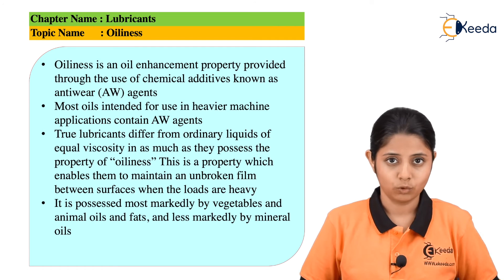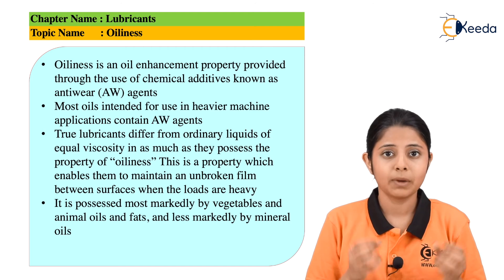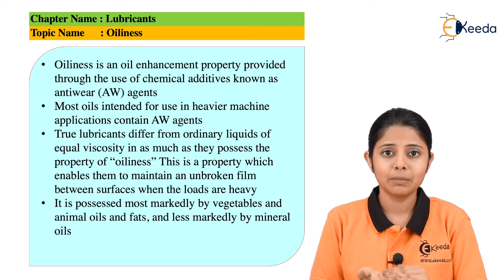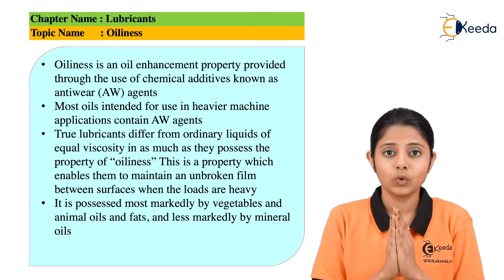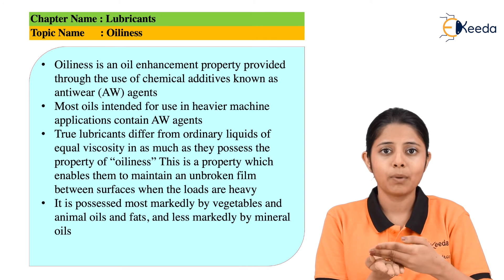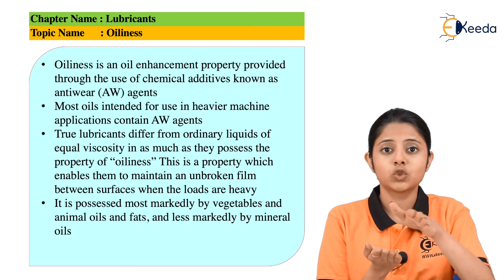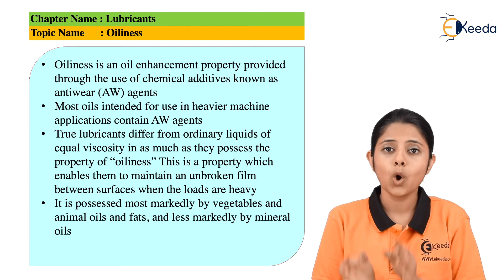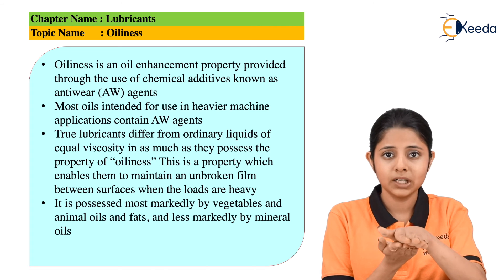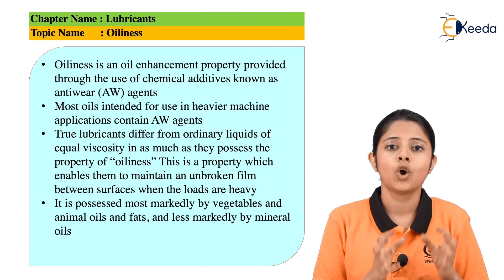Where is this property of oiliness used? Oiliness is the property by virtue of which the oil can maintain a film between two or more parts of a machine. That film helps in maintaining friction levels. If there are two machine surfaces in contact, the oil in the middle — held there by oiliness — helps reduce the friction between them. Less friction happens because of the property of oiliness.